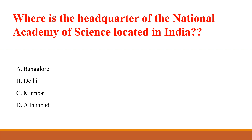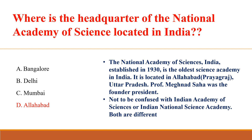Where is the headquarters of the National Academy of Science located in India? Answer: D. Allahabad. The National Academy of Science, India, established in 1930, is the oldest science academy in India. It is located in Allahabad, Prayagraj, Uttar Pradesh. Prof. Meghnad Saha was the founder president. Not to be confused with the Indian Academy of Sciences or Indian National Science Academy — both are different.